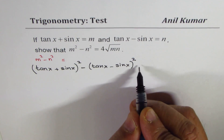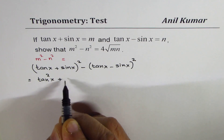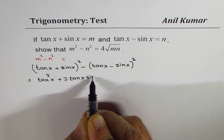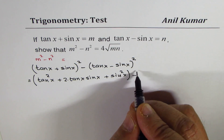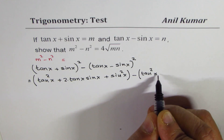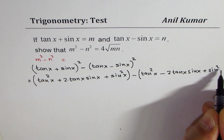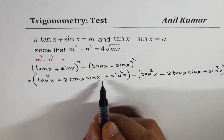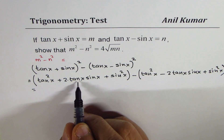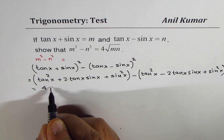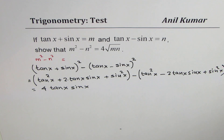Now if I expand these, I get tan squared x plus 2 tan x sin x plus sin squared x, take away tan squared x minus 2 tan x sin x plus sin squared x. If we subtract, tan squared x cancels, sin squared x cancels, and we are left with 4 tan x sin x.